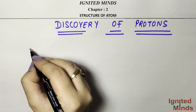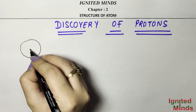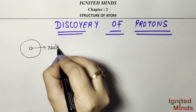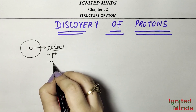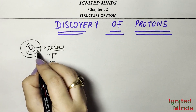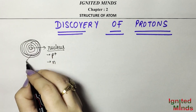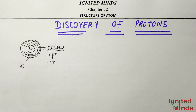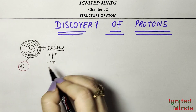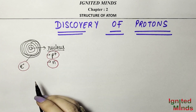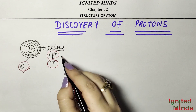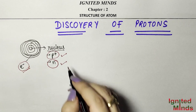If we talk about an atom, we know that at the center is the nucleus. Inside the nucleus, there are protons and neutrons, and outside, electrons revolve in orbits and shells. This atom structure, with three atomic particles — electrons, protons, and neutrons — was studied in 9th standard. In the last video we discussed how electrons were discovered; in this video we will talk about how protons and neutrons were discovered.